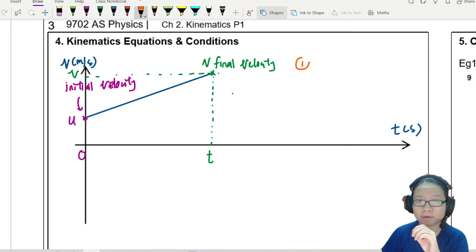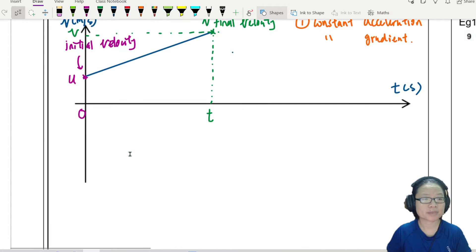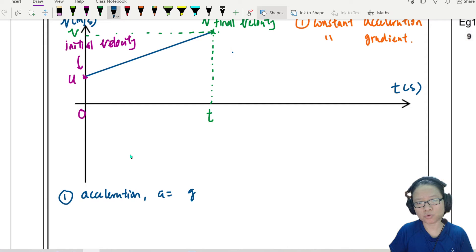The first thing I can say about this graph is that there is constant acceleration. So how do I know the acceleration is constant? Because I have constant gradient, from the definition and the understanding itself, we can form our first kinematics equation. So let me write that down. Number one, acceleration a is equal to the gradient of the VT graph.